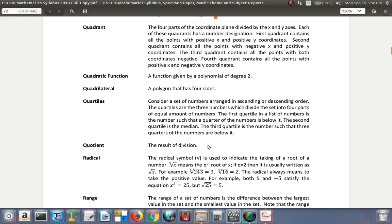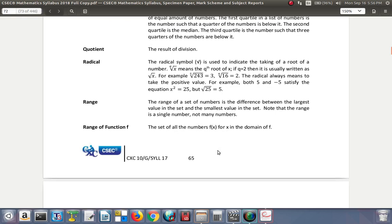Quotient. The result of division, just like how the result of adding is sum, the result of division is a quotient or the answer when you divide is a quotient. Radical. The radical symbol which has a square root sign is used to indicate the taking of a root of a number. So the qth root of x means the qth root of x. If q is equal to 2, then it is usually written as just the radical over x. For example, the cube root of 27 is 3. The fourth root of 16 is 2. The radical always means to take the positive value. For example, if both 5 and negative 5 satisfy the equation x squared is equal to 25, but the square root of 25 is equal to 5, the positive value.